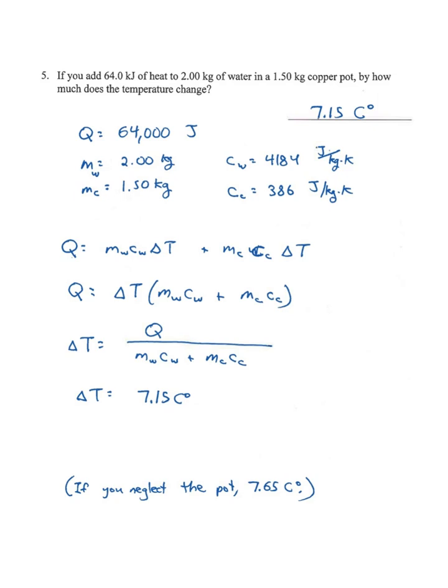Number five: We add heat Q = 64,000 joules to a mass of water, 2 kilograms, and a 1.50 kilogram copper pot. How much does the temperature change? We have the specific heat of water and the specific heat of copper. The equation is Q = mw cw ΔT + mc cc ΔT. Notice I didn't distinguish the change in temperature—the water and pot are the same package, they'll have the same change in temperature. So delta T factors out.